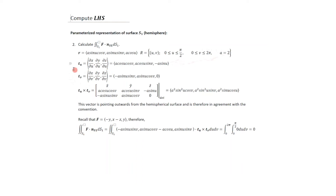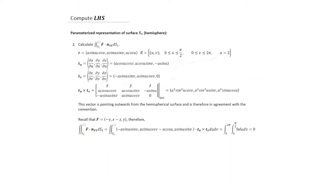The next step is to compute T_∂u and T_∂v. If you compute these partials, you get two vectors. Then take their cross product by computing the determinant of the 3×3 matrix, where the first row is the unit vectors, the second row is the first tangent vector, and the third row is the second tangent vector. The result of this cross product points outwards from the hemispherical surface, so it agrees with the convention and can be used to compute the flux.